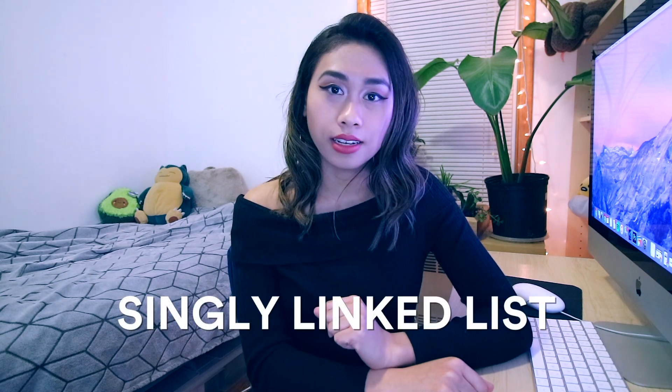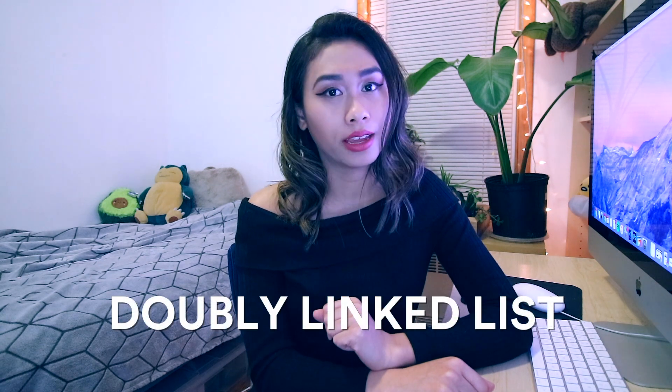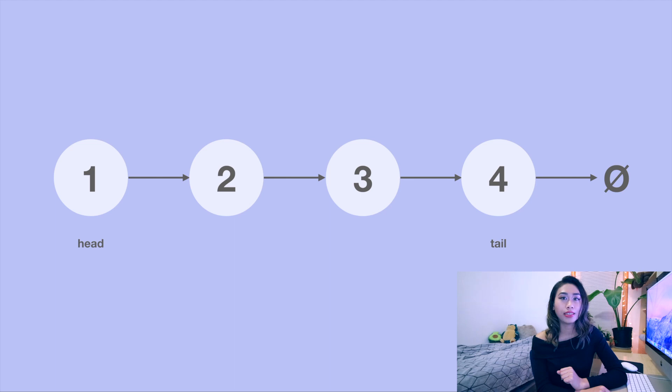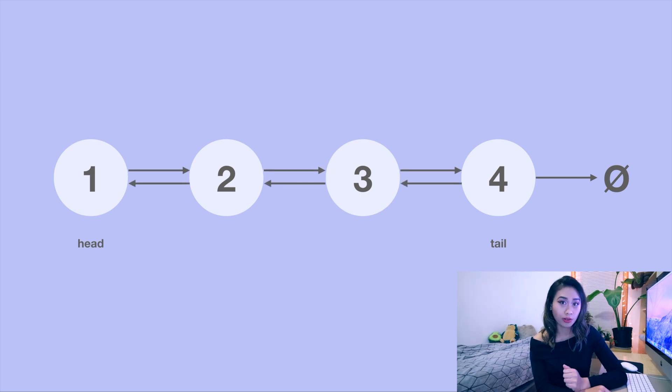To be more specific, what I've just described is a singly linked list, where each node has one pointer to the next node in the list. There are also doubly linked lists, where each node has a pointer to the next node and a second pointer to the previous node. The doubly linked list has just one more piece of information than the singly linked list. This reference to the previous node allows it to be traversed both forward and backward, unlike the singly linked list, which can only be traversed forward.